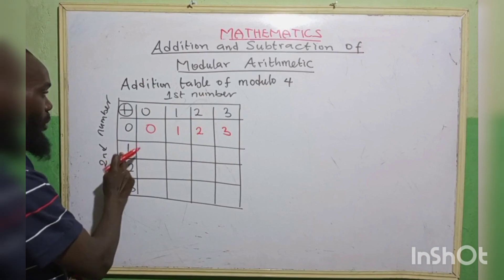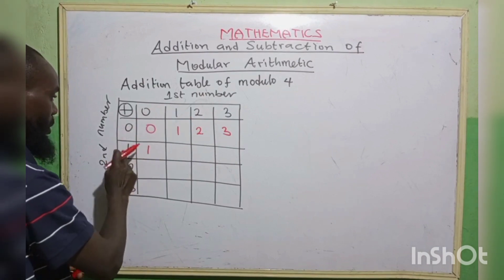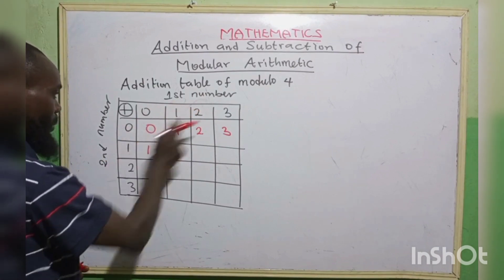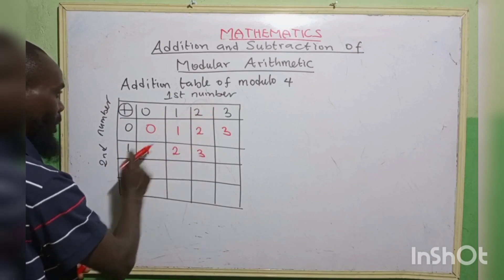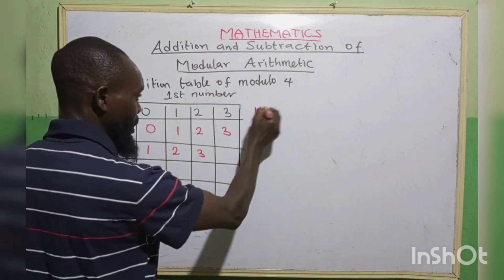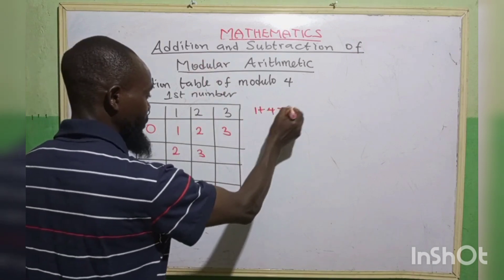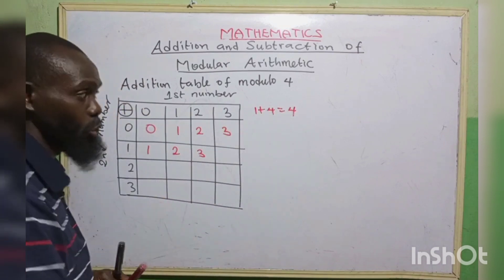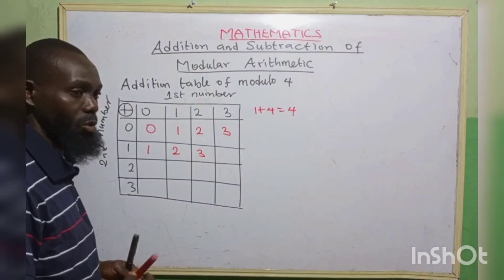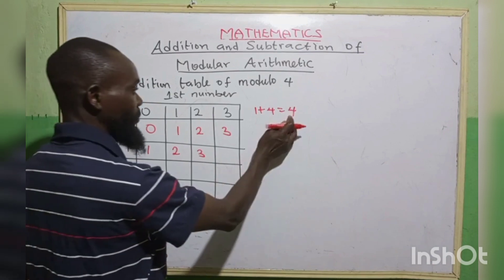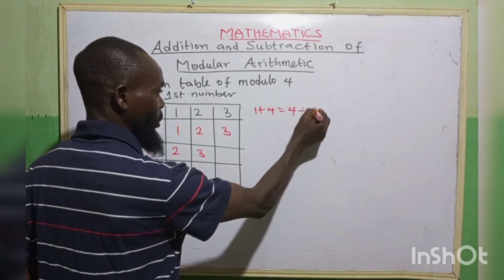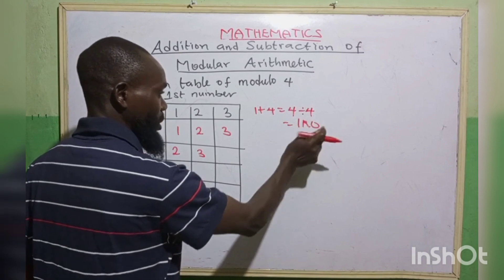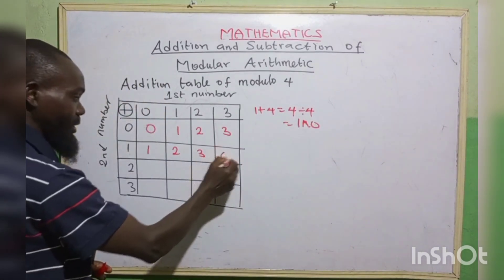Now for the row starting with 1: 1 plus 0 is 1. 1 plus 1 is 2. 1 plus 2 is 3. 1 plus 3 gives 4. When your result reaches the modulo, we divide: 4 divided by modulo 4 gives 1 remainder 0, so we write the remainder 0.